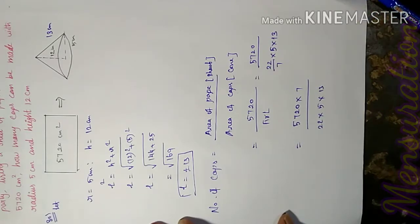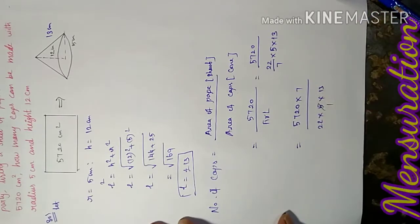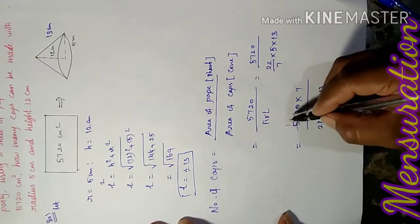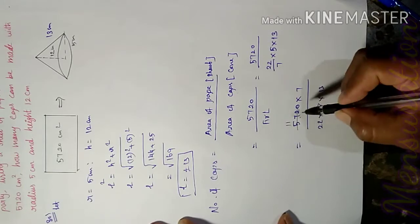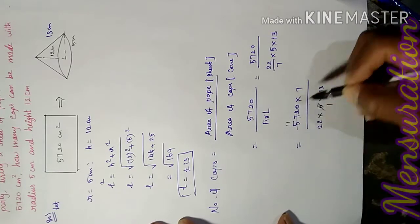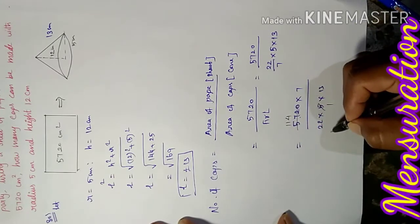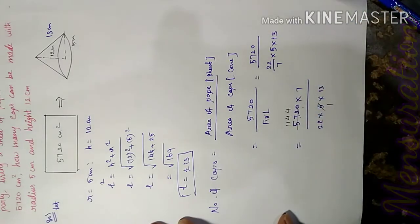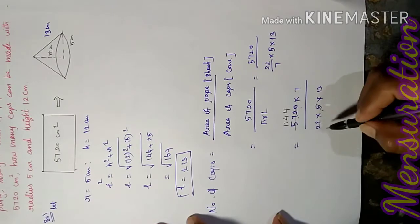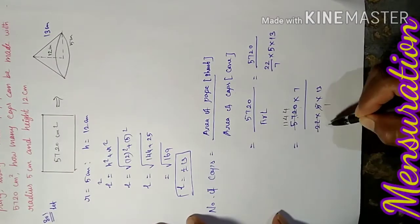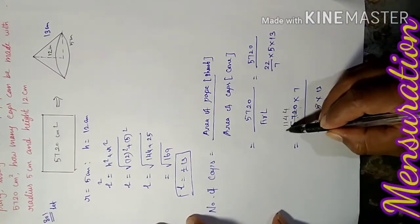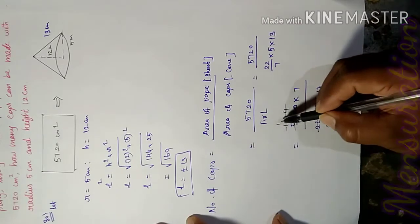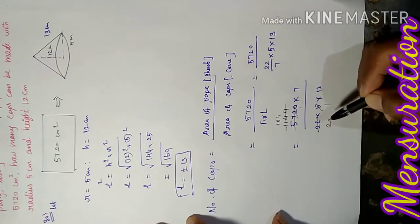The 5 cancels out. Simplifying: 5720 divided by 22 equals 260. Then 260 × 7 / 13. Calculating step by step: 260 × 7 = 1820.